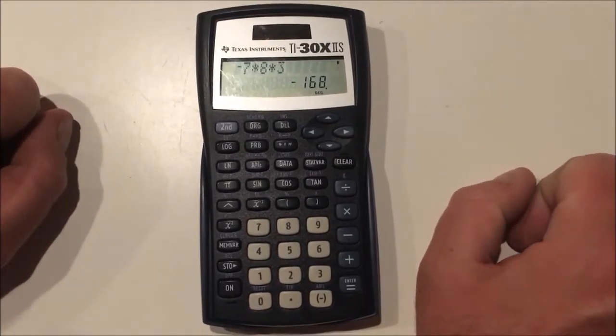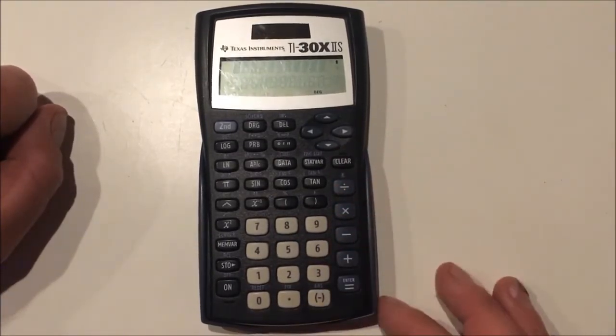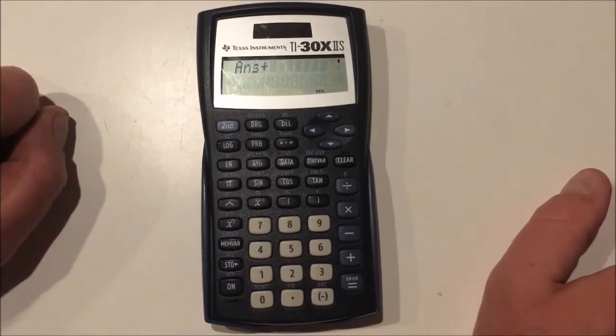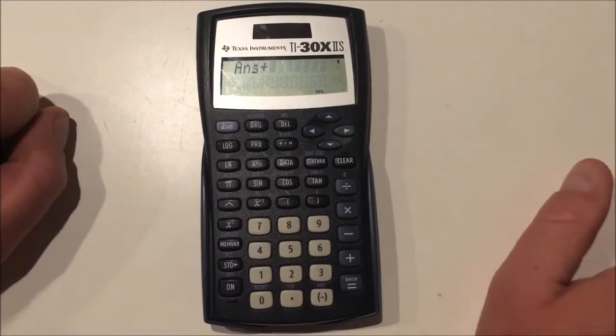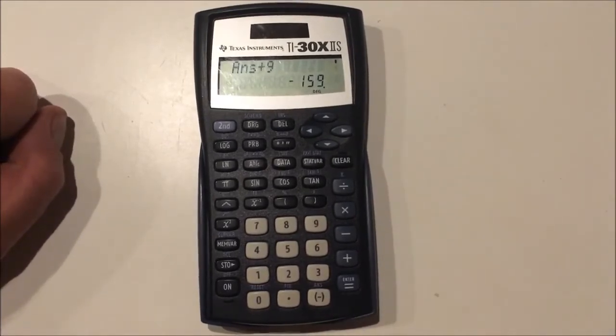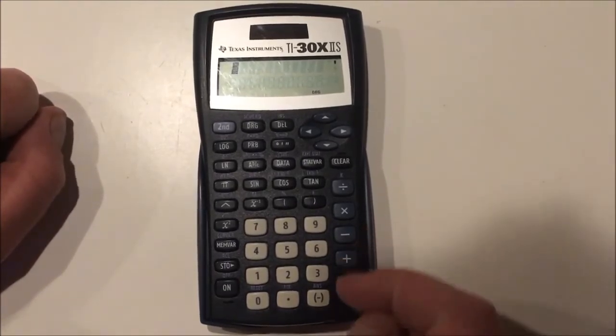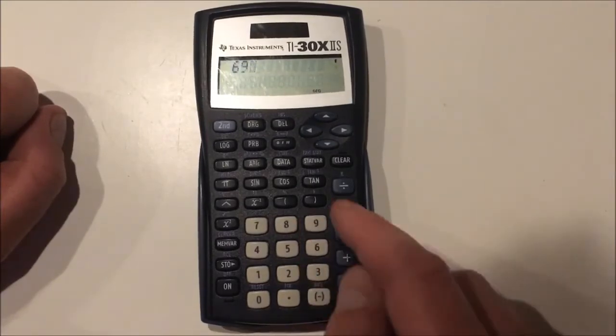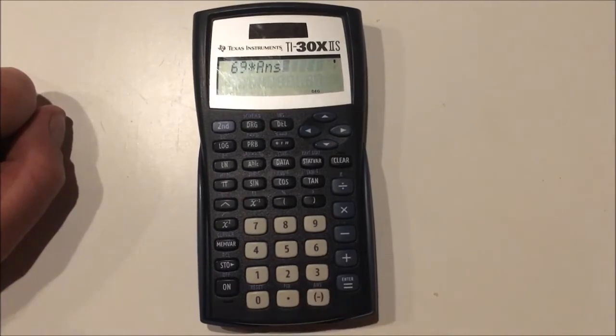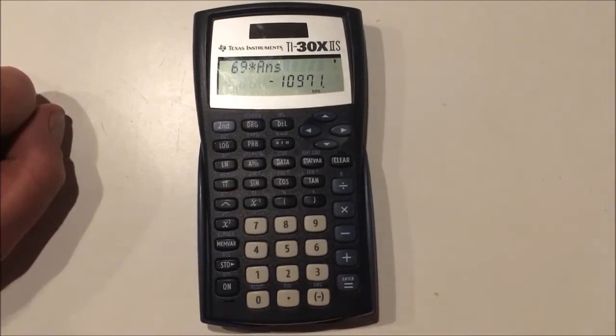Another memory feature is called ANS. This feature is automatically utilized when I press a button for an algebraic operation before I put a number such as the plus sign. What this is doing is it is accessing the previous answer from my previous expression. Another way to use answers is if you like your previous answer you need to use it for something else. I can press second minus sign, you see ANS there. That also generates your previous answer which in this case was negative 159.